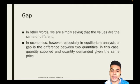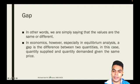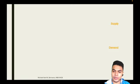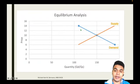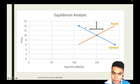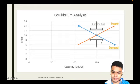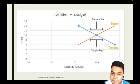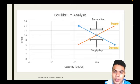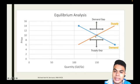In economics, especially in equilibrium analysis, a gap is the difference between two quantities — in this case, quantity supplied and quantity demanded given at the same price. If we look at the graph for the demand curve and the supply curve, above the equilibrium point there would be a demand gap, and below there would be a supply gap. What we are trying to find out is the point where the two curves meet — that is our equilibrium.